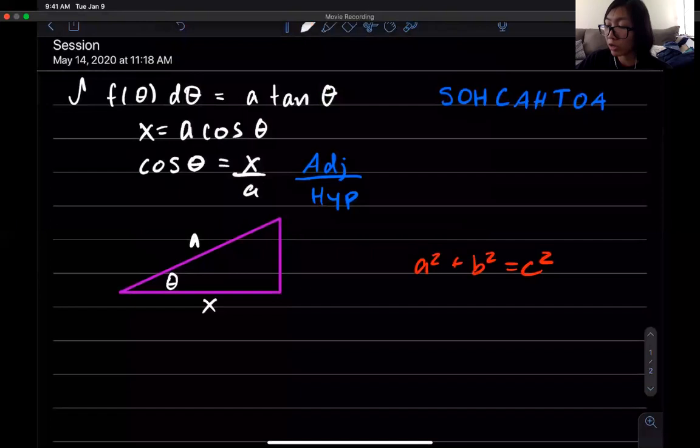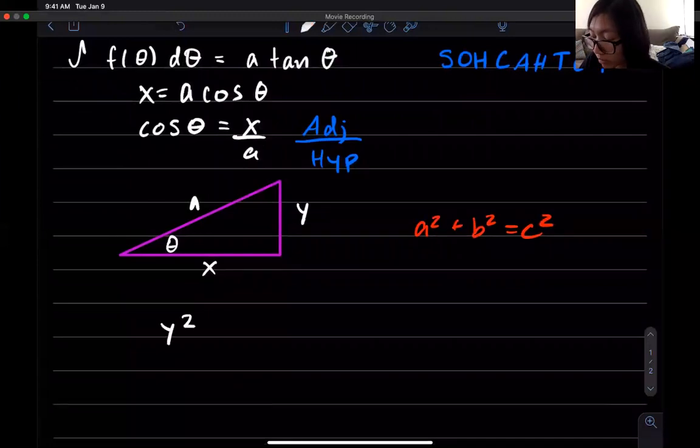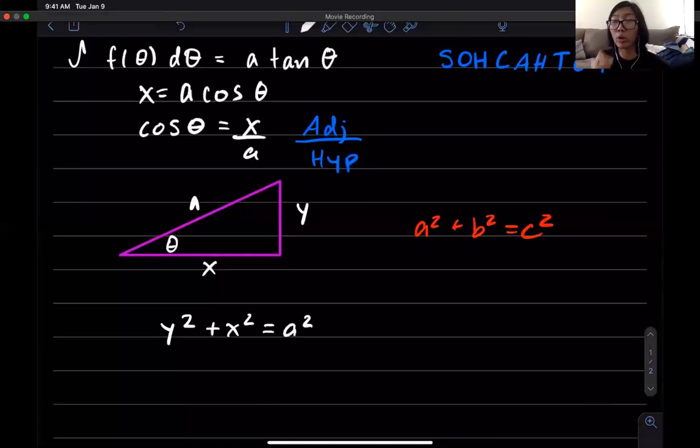So for our triangle right here our hypotenuse is a and one of our sides is x so let's call this side y. I need y squared plus x squared that has to equal a squared. What I want to do is I want to solve for y because I need that opposite side so I can find tangent.